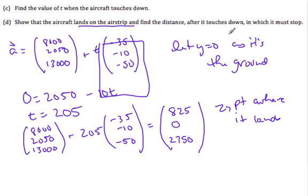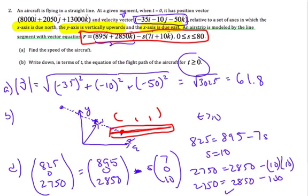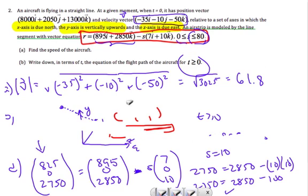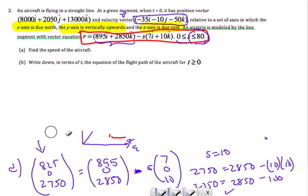Now it says find the distance after it touches down in which it must stop. Here is my restrictions on my landing strip. It's landed already at this coordinate point, and the airstrip ends when s is 80.